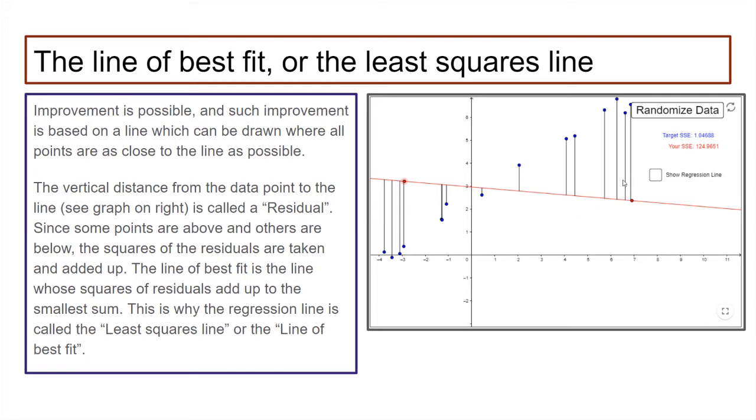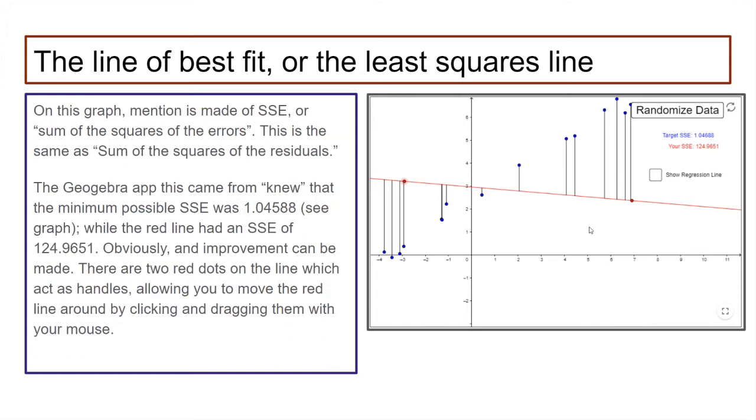As you can see, there's clearly a linear trend of those blue points. The blue points are the data points. I just made this line do something really stupid and made these residuals as high as possible. It turns out in blue here, it says target SSE. That's the sum of the squares of the residuals. It says 1.04688, and that tells me that it already knows what the line should be. So it's asking me to guess what the line should be.